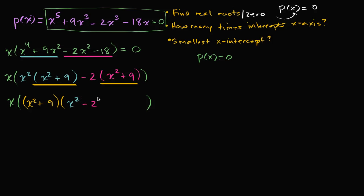So far we've been able to factor it as x times x squared plus nine times x squared minus two. The whole point of factoring this is that if I can find the product of a bunch of expressions equaling zero, then I can say the product is going to be zero if one or more of those expressions equals zero. This one is completely factored if we're thinking about real roots.